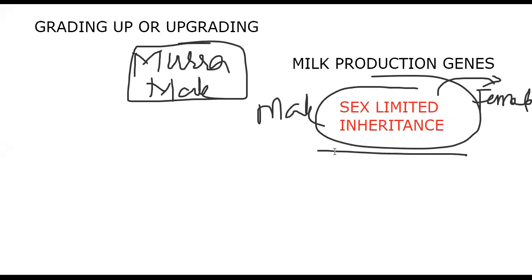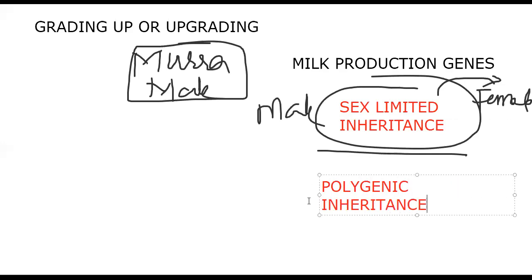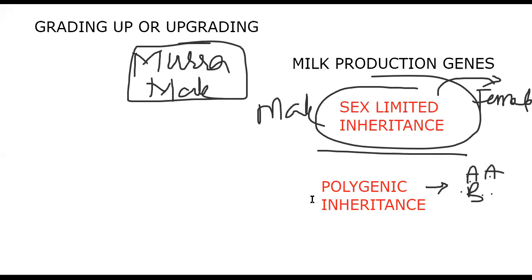Milk production is also polygenic inheritance — meaning it is not a single gene but a group of genes responsible for expression. Multiple genes are responsible, and the more dominant genes present, the more milk production. This is polygenic, meaning many genes express this character.